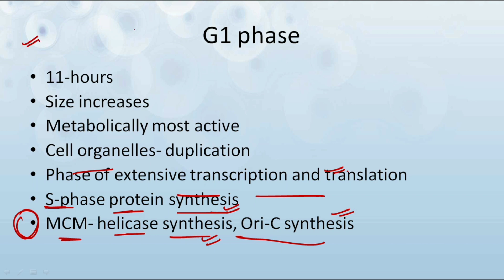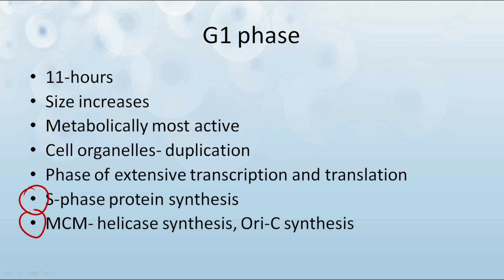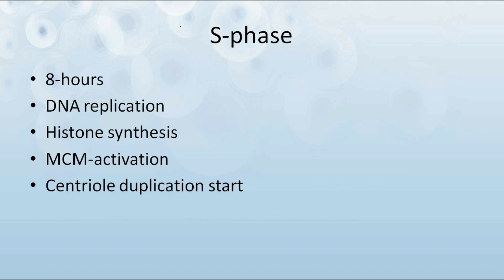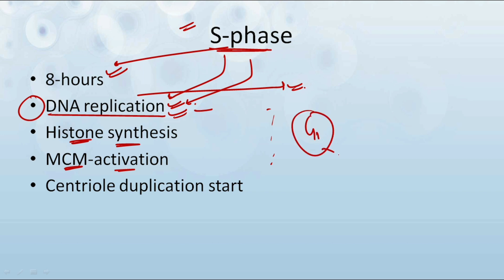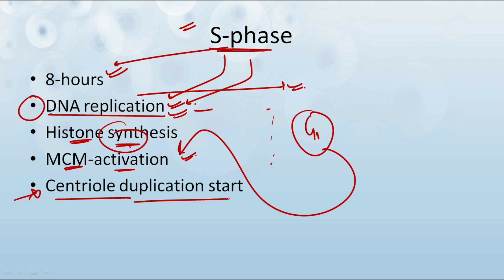Remember these points, because in exams direct questions are put up from this area — for example, which is the most metabolically active phase, which is the G1 phase. Questions have also been framed from the MCM helicase and Oric synthesis points. The second phase is the S phase, which is for 8 hours. In the S phase: first, DNA replication occurs; after that, histone synthesis occurs; then MCM activation occurs — note that MCM synthesis occurred in G1 phase but activation occurs in the S phase. Finally, centriole duplication starts in the S phase.